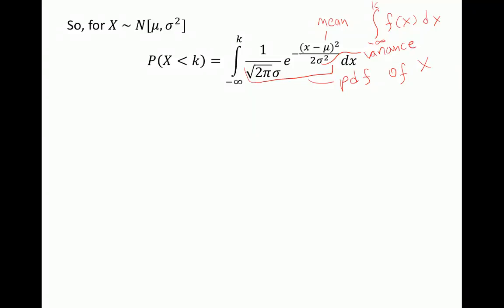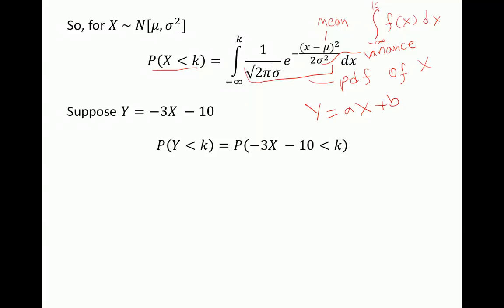So P(X < k) is our cumulative probability density function. Now suppose we transform x into y, and y equals ax plus b. In this case suppose y equals negative 3x minus 10, and we're interested in the distribution of this new variable y.